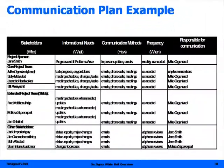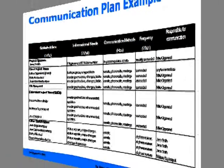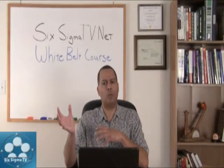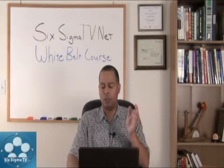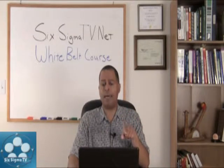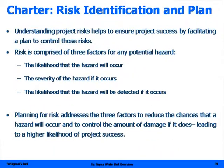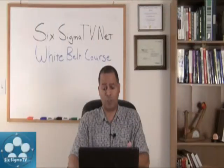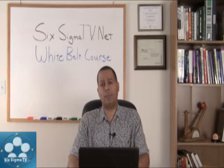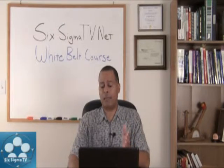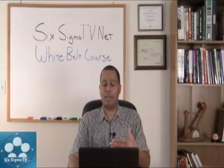You want a communication plan in your Define phase — the ability to communicate throughout the organization what's going on with the project and who will be impacted. Some stakeholders need to be notified daily, some are on the project team, some just need to be informed so that when changes happen they knew they were coming. A communication plan template is available at SixSigmaTV.net. You also want to look at the risk of doing the project, using a risk prioritization template to understand legal risks, risk to customers, risk of not doing the project, and potential negative impacts.